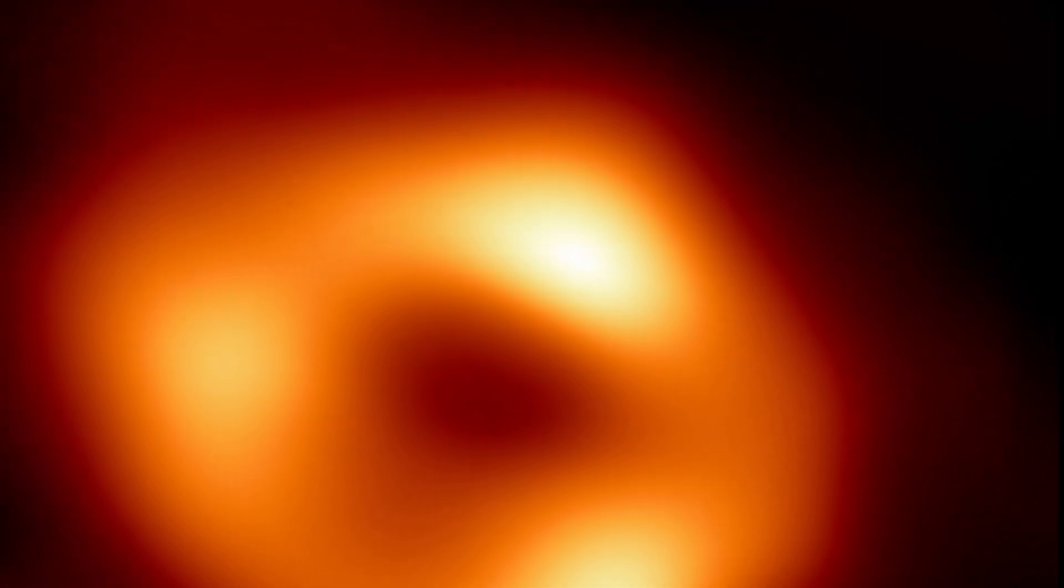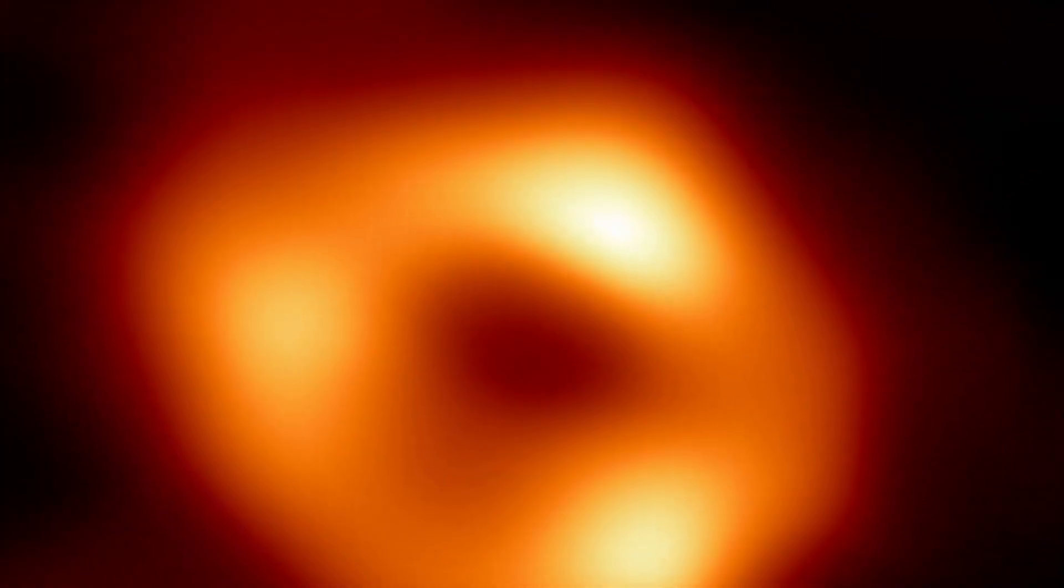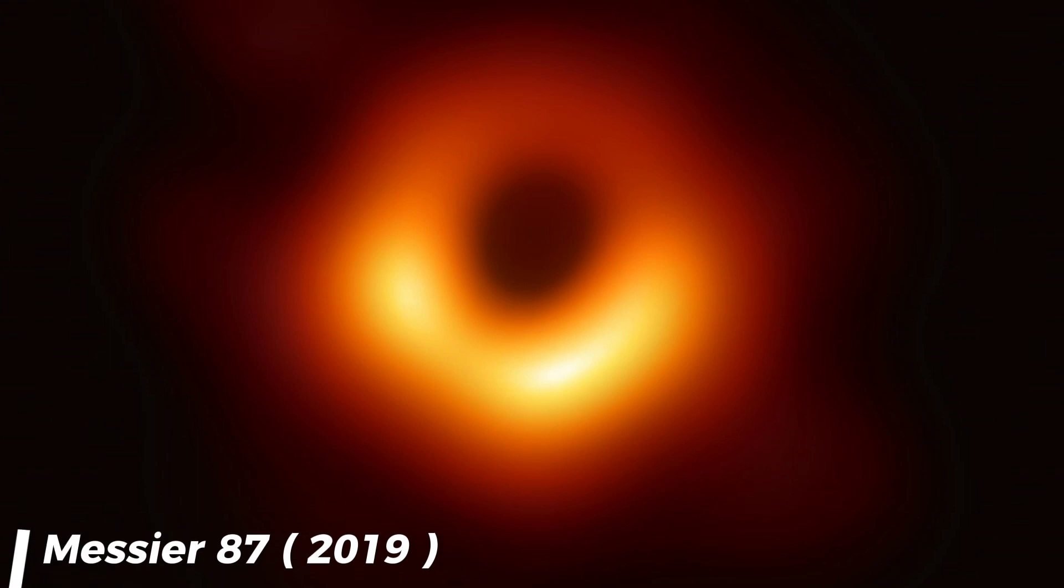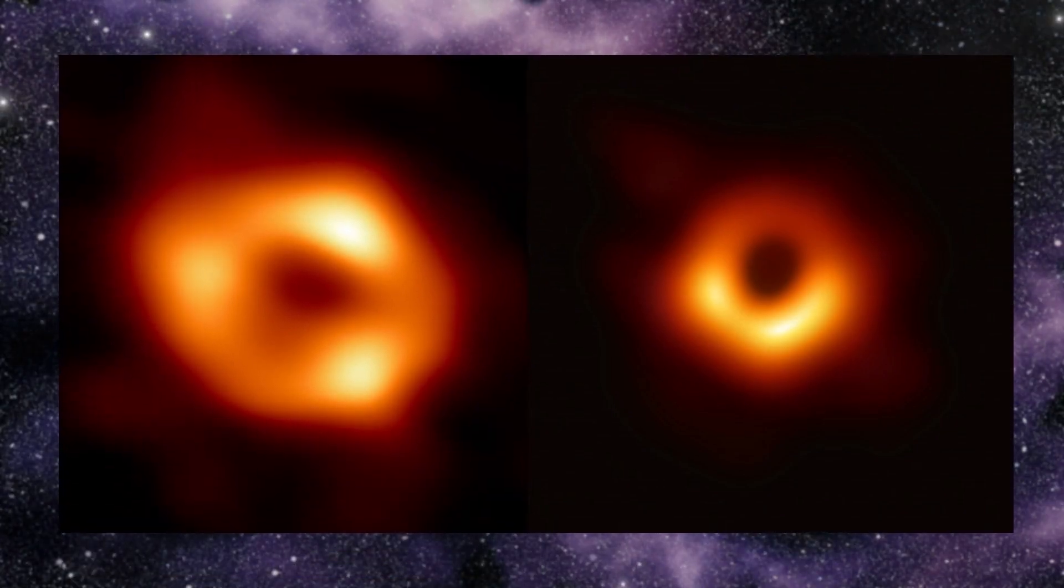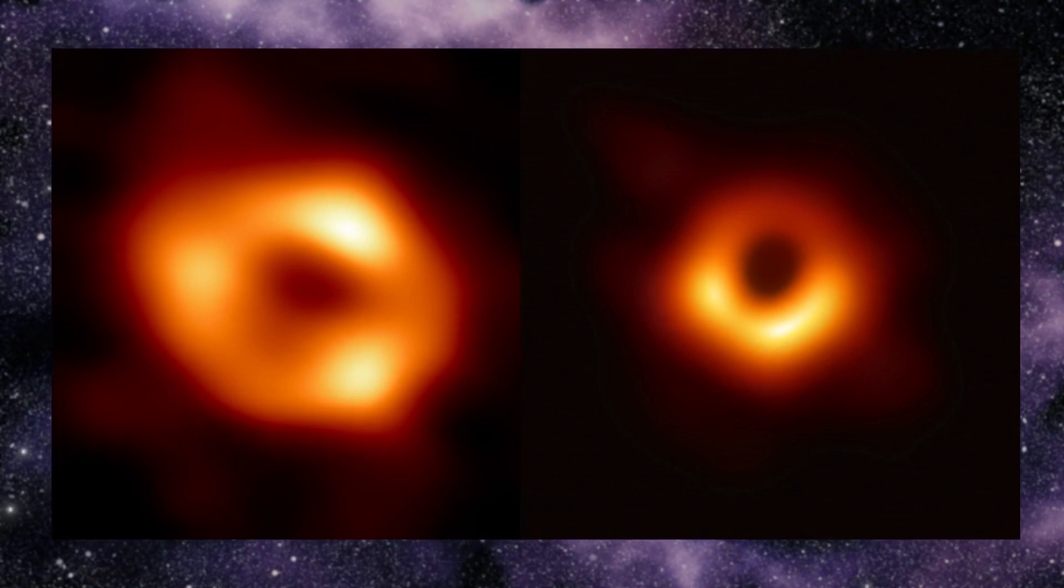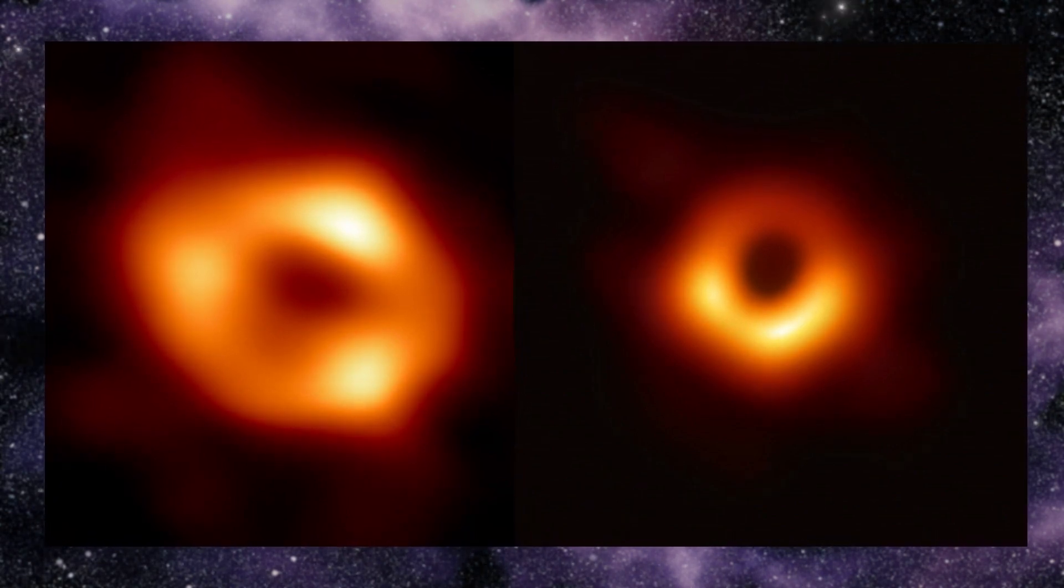This is why you'll see this image to be rather similar to the one taken of Messier 87, which was revealed in 2019. But don't get them mixed up, though, because they're two completely different black holes which are extremely distant from each other.